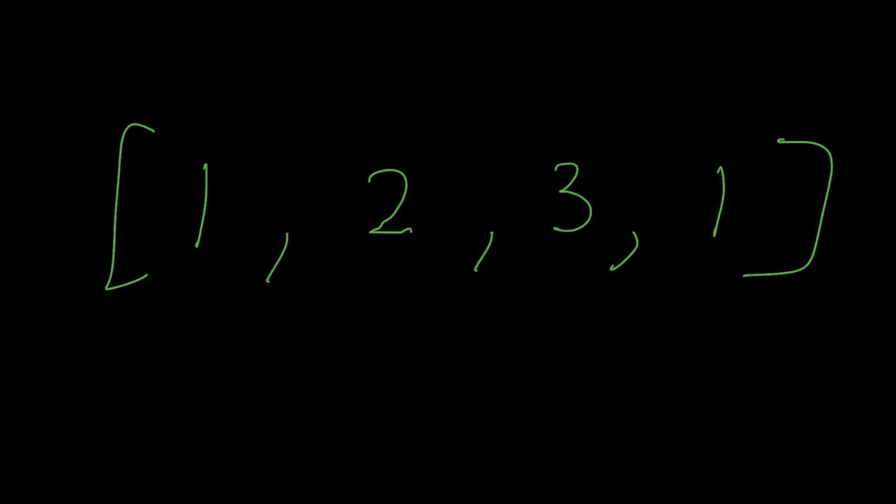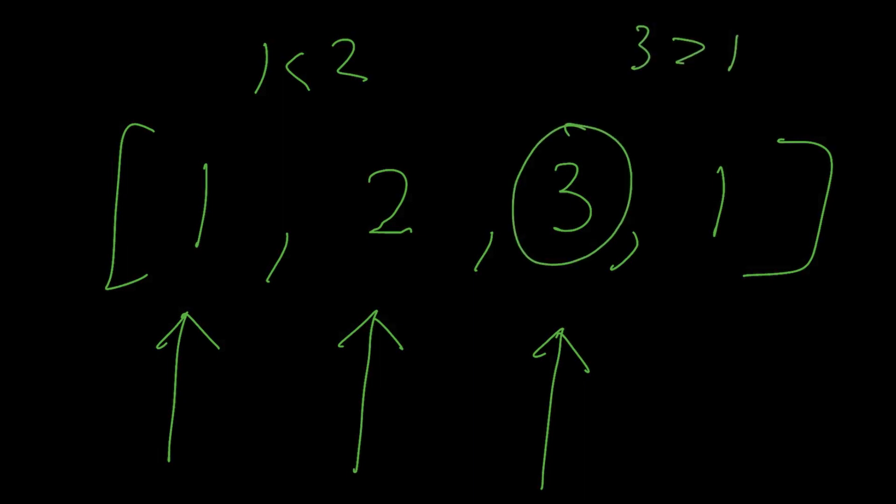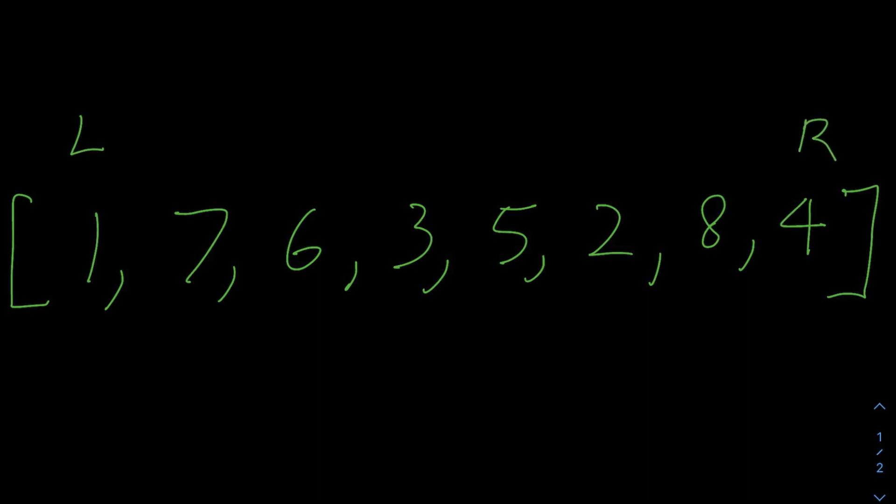So this question seems pretty straightforward, and your first instinct is probably just to iterate through the numbers array one by one and check if the current element is greater than the next one. This works, but the issue is that this method can be slow because you're just reducing your search space one number at a time. And this is where the power of binary search comes in.